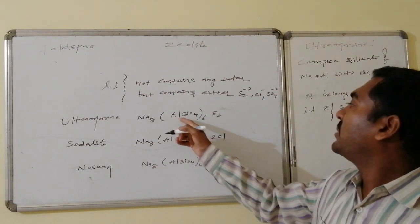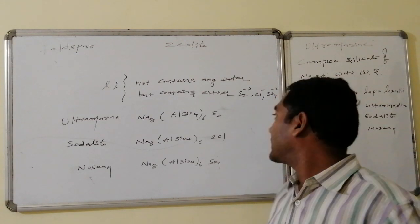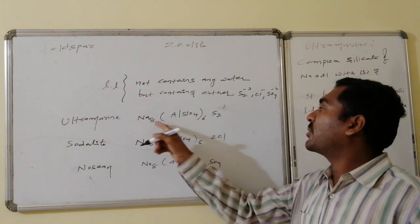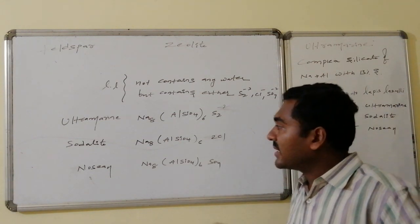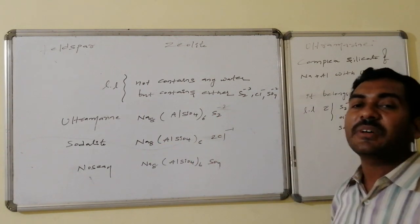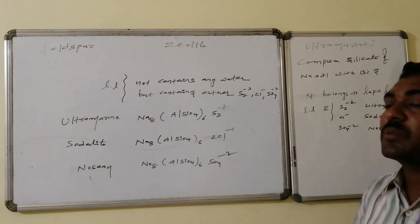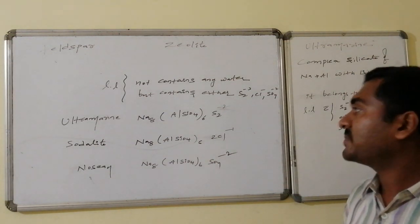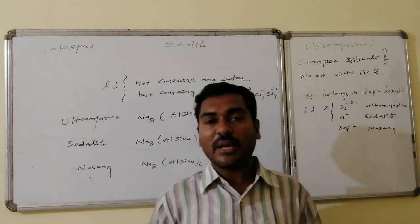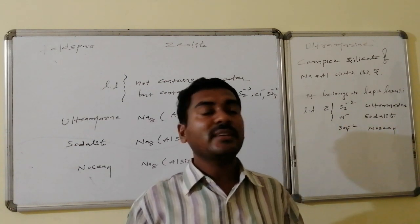The formula for ultramarine is Na8(AlSiO4)6·S2 2-, with six aluminiums requiring six units of positive charge from eight sodiums (+8), with two units balancing the S2 2- anion. Sodalite has the formula Na8(AlSiO4)6·Cl2, and nosean has Na8(AlSiO4)6·SO4. These compounds all belong to the lapis lazuli category, each with corresponding formula, composition, and specific uses.